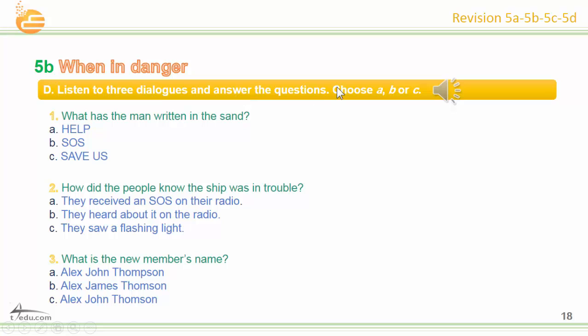Listen to three dialogues and answer the questions. Dialogue one: What are you doing? I'm writing in the sand to signal for help. We're sitting on a beach next to the hotel — I'm just having some fun. You should write SOS — you know you can read it upside down. That's true. Anyway, 'save us' is too long. Okay, I'll write SOS. Dialogue two: What a lovely day to be sailing! Quick, come and see — I think there's a ship in trouble. It seems okay, it's not sinking or anything. Keep looking — there's a flashing light. Yes, you're right, and it's Morse code. Is it an SOS signal? Yes, get on the radio — they need help, and fast.